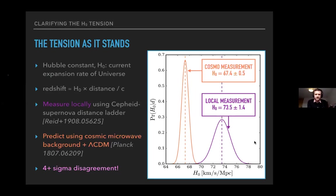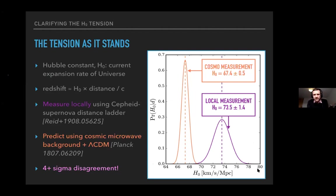The unique thing about the Hubble constant is that it's a cosmological parameter, meaning we can also take cosmological data and a cosmological model, fit that model, and generate an inference of what the Hubble constant should be. If we take our best cosmological model — the CMB anisotropies as measured by the Planck satellite with Lambda CDM — we infer ~67.4 km/s/Mpc with sub-percent precision. These two values completely disagree at four-plus sigma.